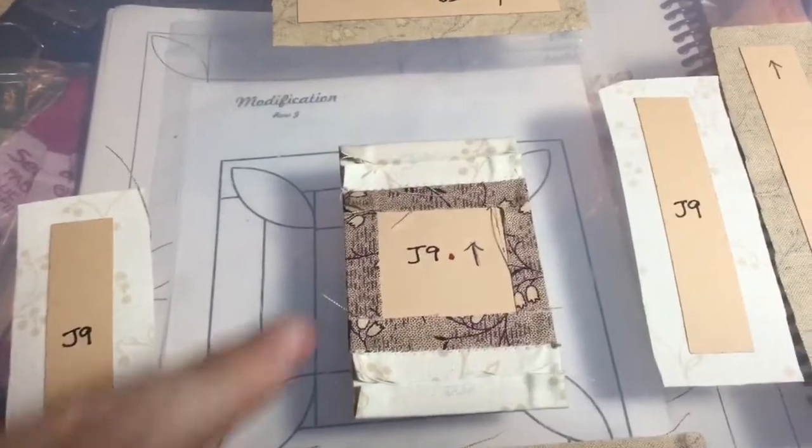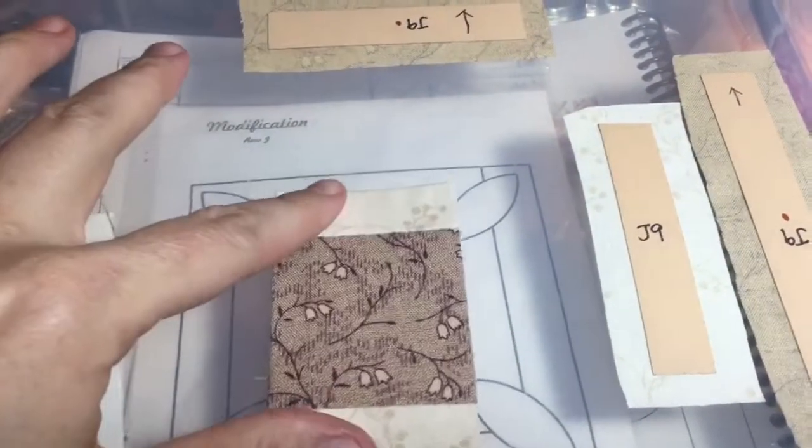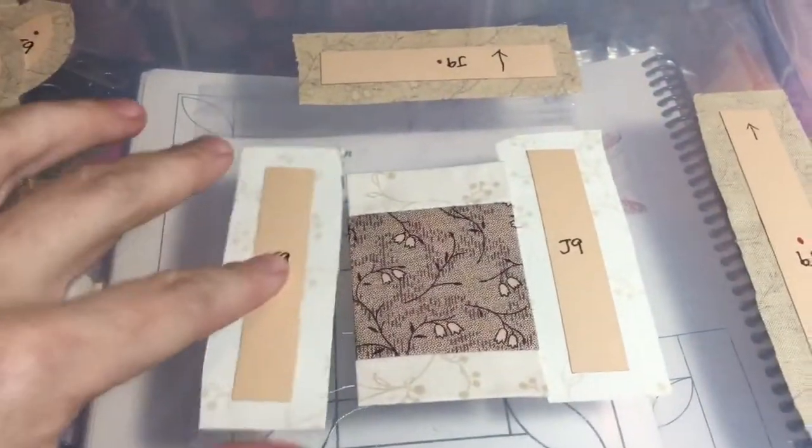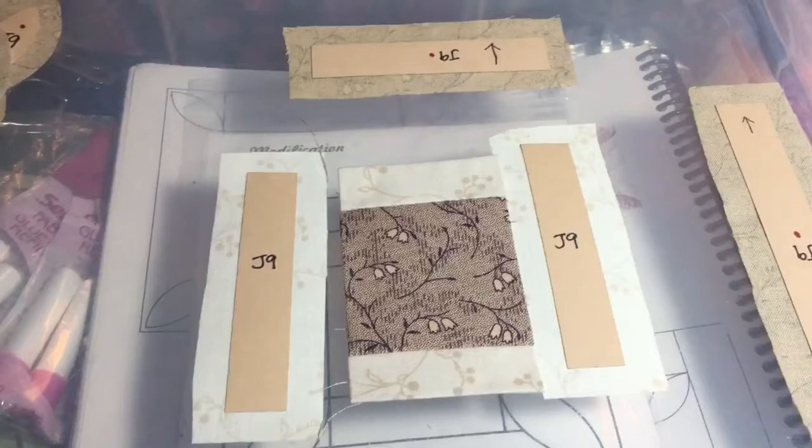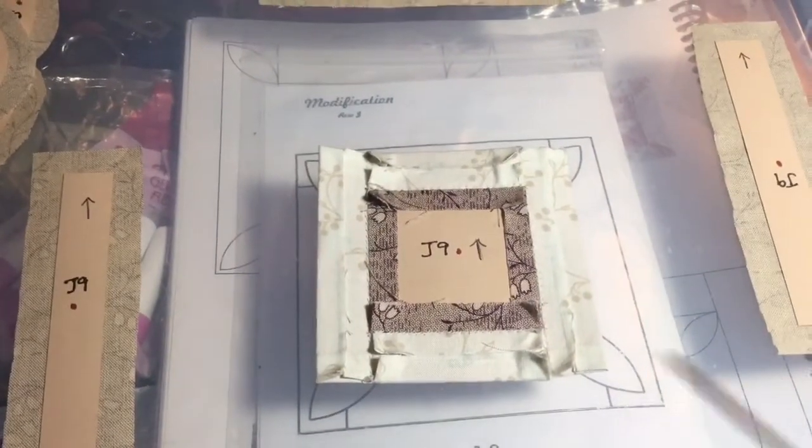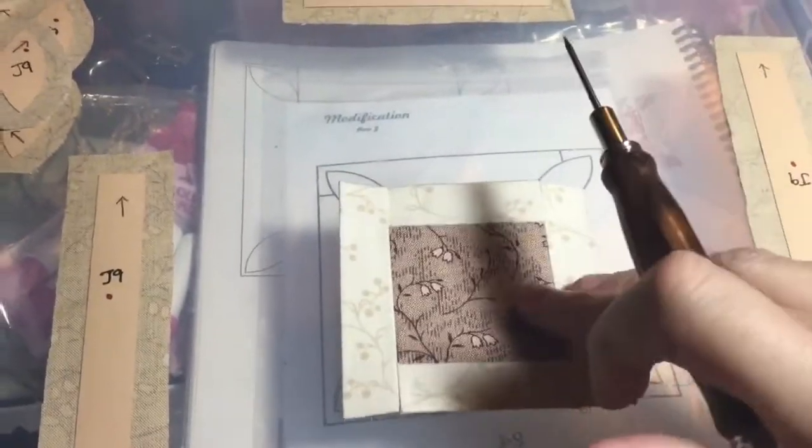So I've attached the top and bottom rectangles to the center square, and now I'm going to baste and attach each one of these to the sides. So I've attached my rectangles to my center section. I've got that whole middle block complete.